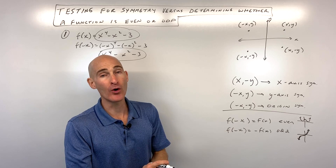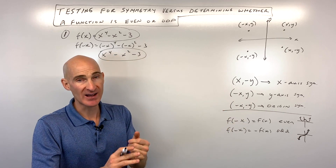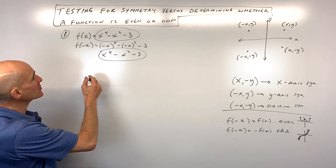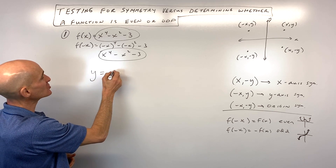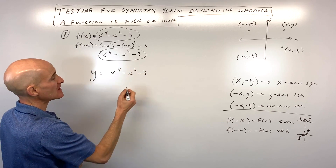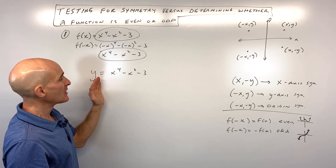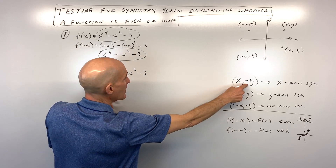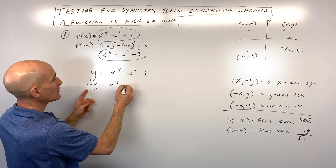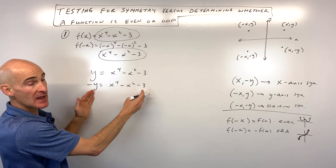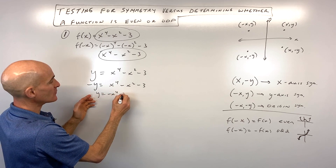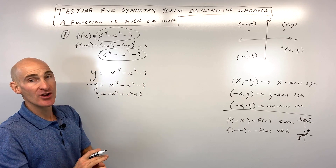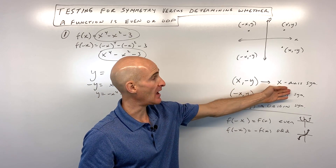A function can't be both even and odd, but with symmetry tests, it could have x-axis, y-axis, or origin symmetry. Rewriting f(x) as y = x⁴ − x² − 3, let's run the three symmetry tests. For x-axis symmetry, we replace y with negative y. Multiplying through by negative one gives y = −x⁴ + x² + 3, which doesn't match the original equation, so it doesn't have x-axis symmetry.